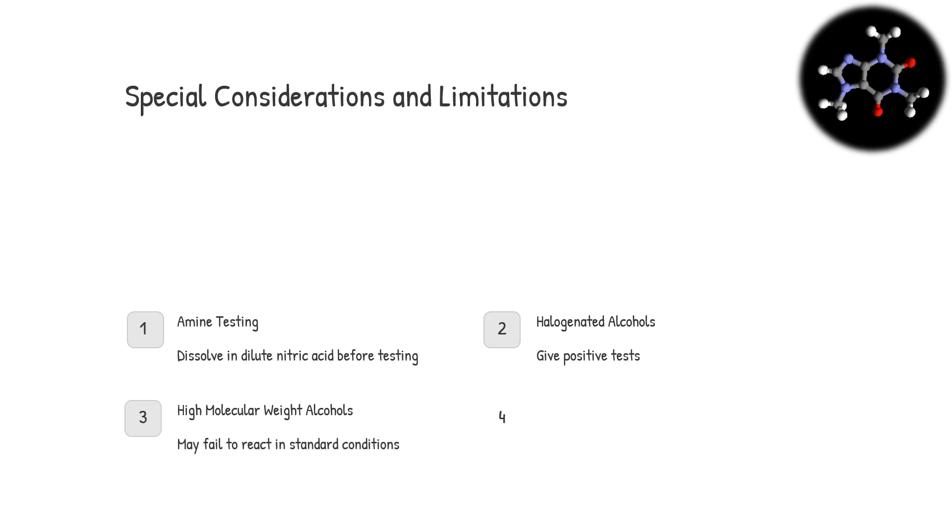The test has some special considerations and limitations. Basic aliphatic amines cause precipitation of white ceric hydroxide, but can be tested if dissolved in dilute nitric acid. Alcohols containing halogens give positive tests. Very insoluble alcohols of high molecular weight fail to react and do not give a red color. Long-chain alcohols, C12 and above, can be tested using acetonitrile solution of ceric ammonium nitrate at its boiling point, 82 degrees Celsius. The test is particularly useful for detecting the presence of hydroxyl groups in organic compounds.